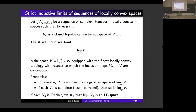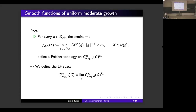Equipped with this notion, we can define an LF topology on the space of left G(F)-invariant smooth functions on G(A) of uniform moderate growth of exponent D by this formula. In this way, C∞_UMG,D(G) becomes a Hausdorff, complex, barreled, and complete locally convex space, but it is not Fréchet.